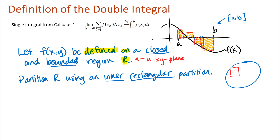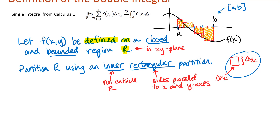The inner rectangular partition means the sides of the pieces are parallel to the x and y axes, so we can talk about the dimensions of those little boxes as having a Δx and a Δy dimension. In general, the partition is a set of rectangles R₁ through Rₙ.